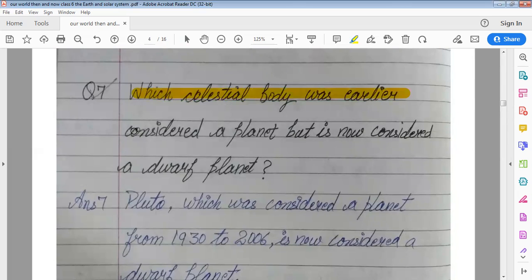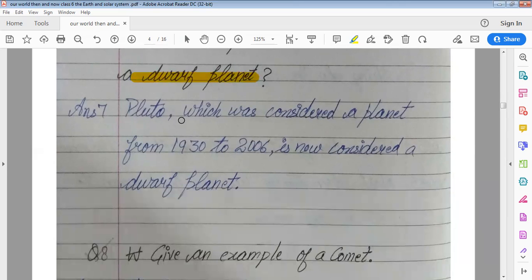This celestial body was earlier considered a planet but is now considered a dwarf planet. Pluto which was considered a planet from 1930 to 2006 is now considered a dwarf planet.